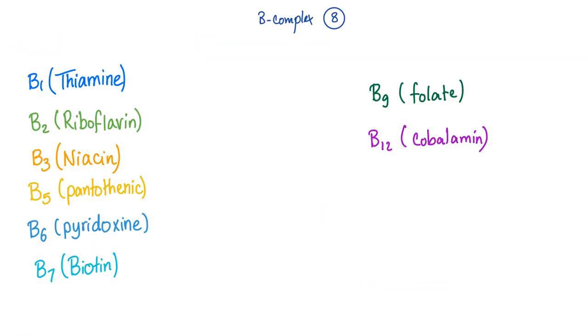Let's review the vitamin B complex. B1 is thiamine, B2 riboflavin, B3 niacin, B5 pantothenic acid, B6 pyridoxin, B7 biotin, B9 folate, B12 cobalamin.